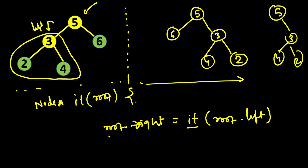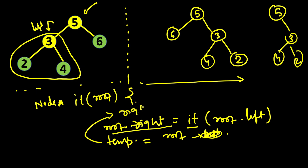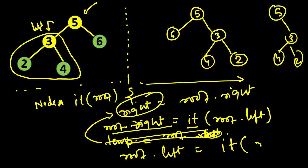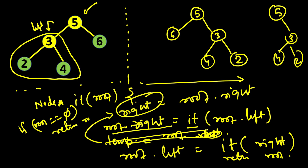We need to store the original left somewhere, so temp equals root dot left. Actually, we store the right since we are updating root dot right first. We save the earlier right, then set root dot right equal to the inverted left subtree. Then root dot left equals invert tree of the saved right value. Finally, add a null check: if root is null, return root.